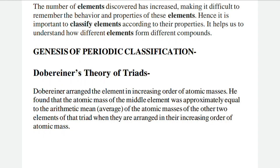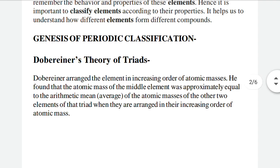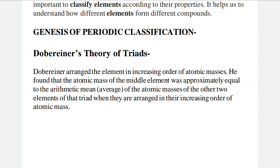Dobereiner found that the atomic mass of the middle element in a triad is equal to the arithmetic mean of the atomic masses of the other two elements on either side of it. That is why the name 'triad' was given — because he studied three elements at a time.